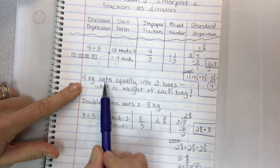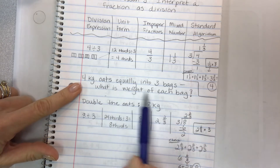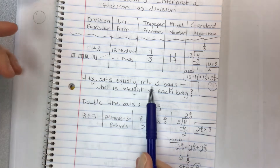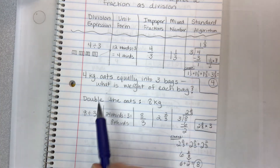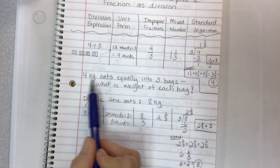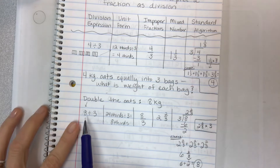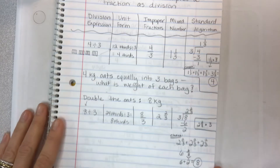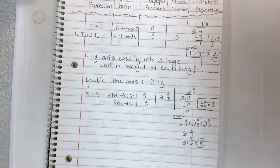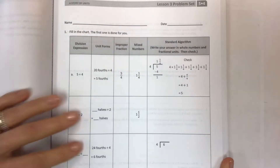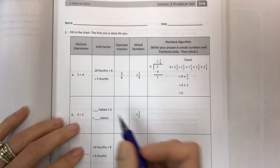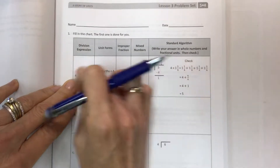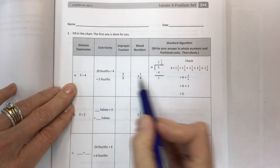This could be the type of word problem where you'd see numbers used with words — for example, four kilograms of oats equally divided into three bags: what's the weight of each bag? That's a typical setup. What happens if you double the oats? Doubling means the three stays the same but everything else changes a bit. Anyway, let's move on and get into the book and start solving. I think the easiest way is to see it and practice it.